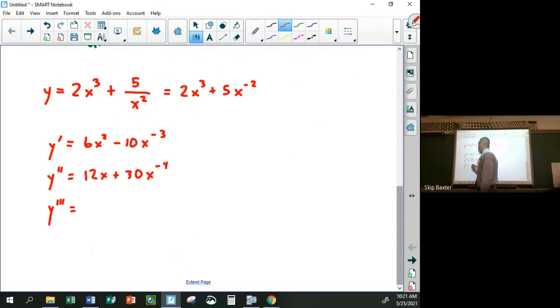So the third derivative, this would be 12 minus 120x to the negative 5. Now eventually, the polynomial part of it, which is the 2x cubed,